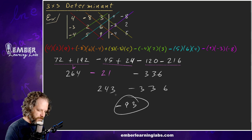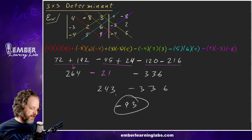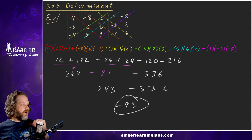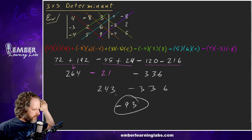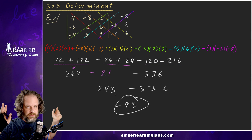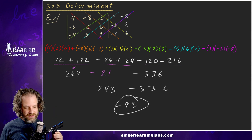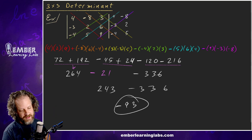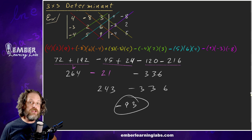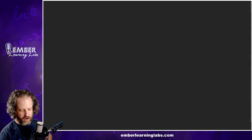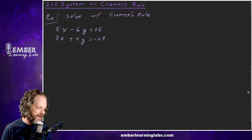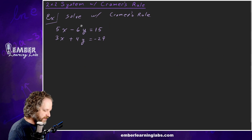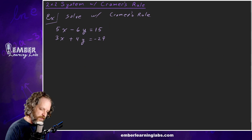Now we know how to do the determinant. This is going to be a longer lesson because it's a longer lesson. So now let's see how to use the determinant to solve a system. We haven't learned the Cramer's Rule part yet. We're supposed to solve this system with Cramer's Rule, starting with a 2x2.